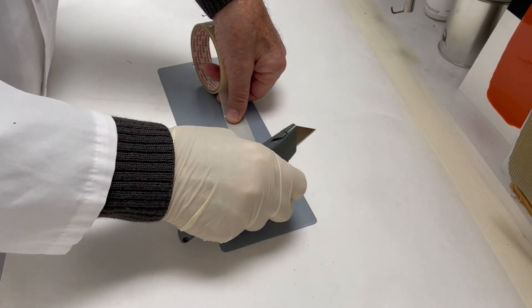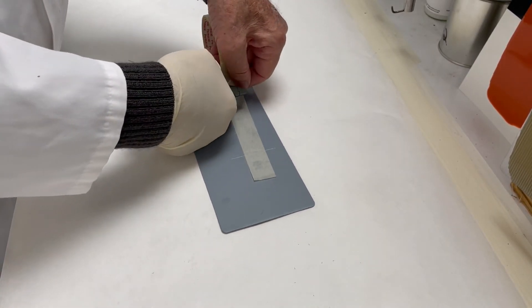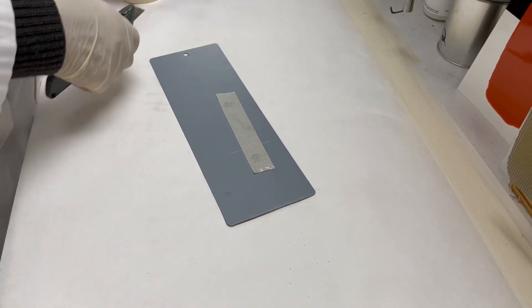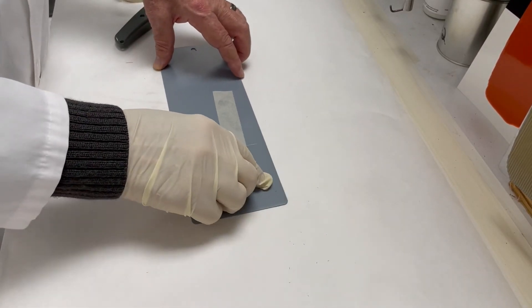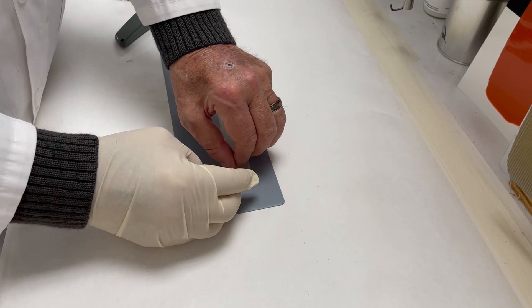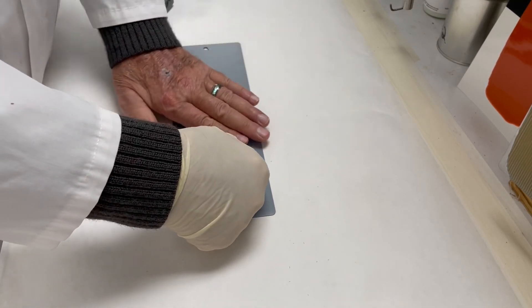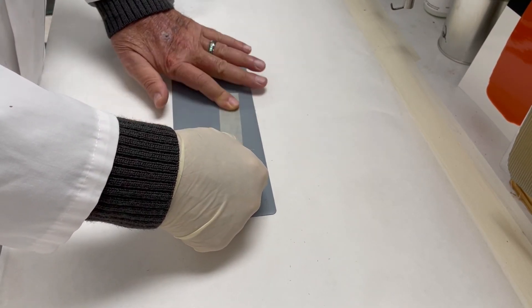So we apply the tape again, press it down, and then grab a hold of it and gently but steadily pull the tape up from the panel.